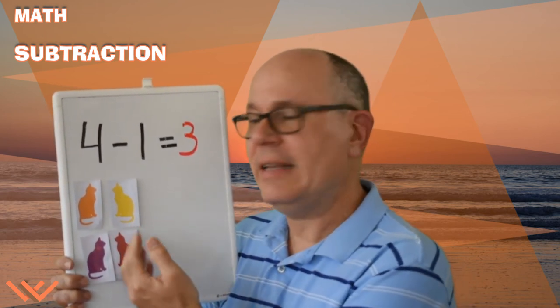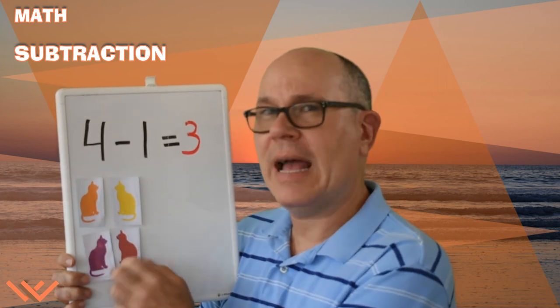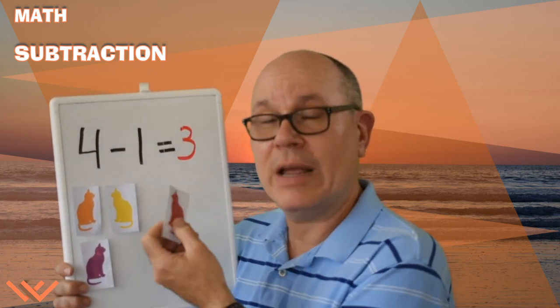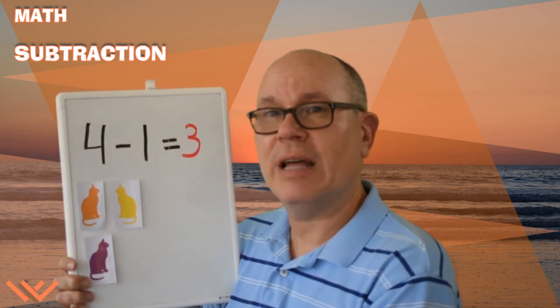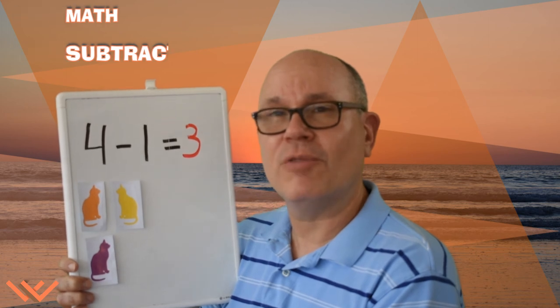Let's take a look at the kitty cats. We have four kitty cats, and one walks away. So we take one away, or we subtract it. And how many do we have left? Three. That's how subtraction works.